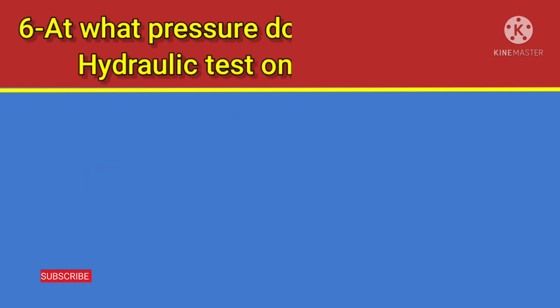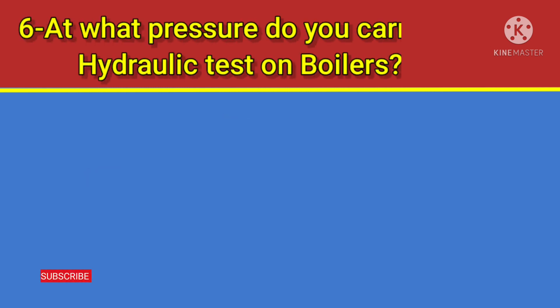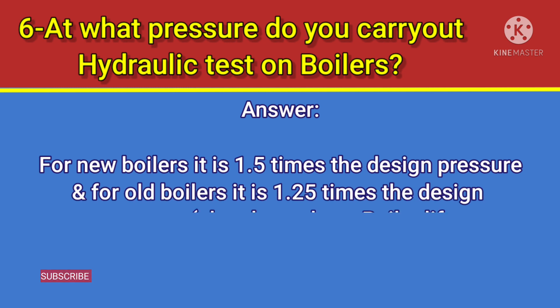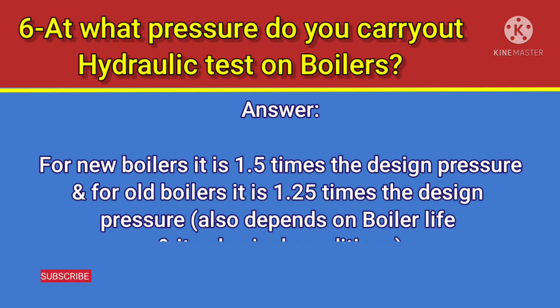Question number 6: At what pressure do you carry out a hydraulic test on boilers? Answer: For new boilers it is 1.5 times the design pressure, and for old boilers it is 1.25 times the design pressure. It also depends on boiler life and its physical conditions.